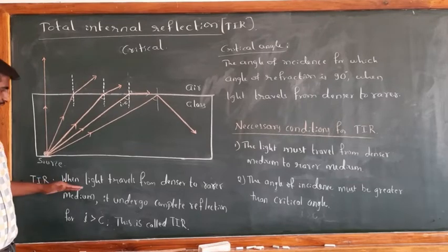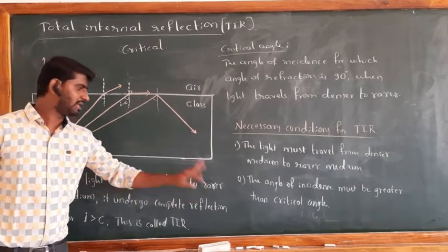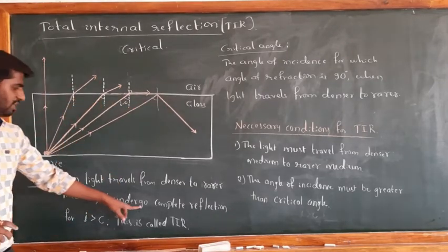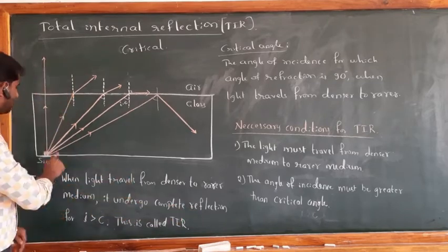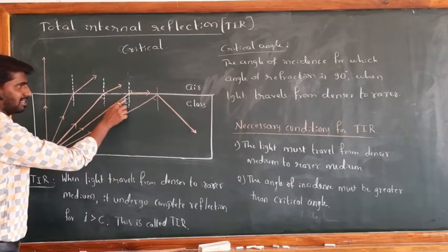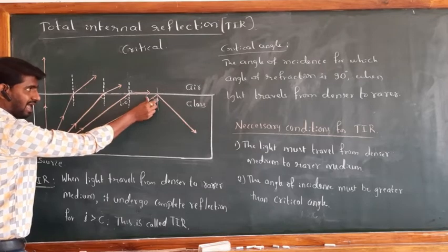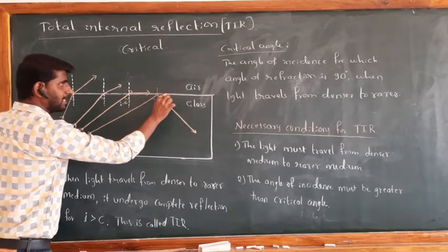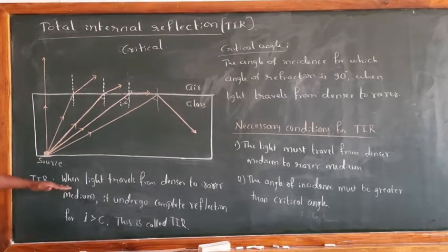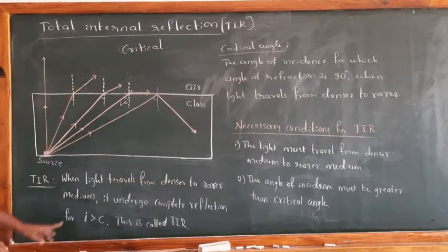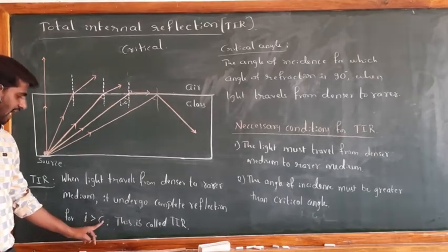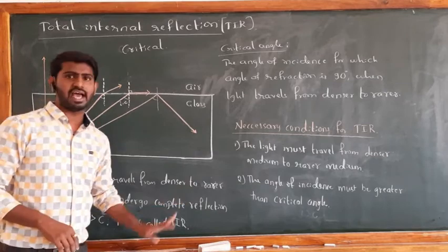When light travels from a denser medium to a rarer medium, such as glass to air, it undergoes complete reflection for I greater than C. Here C is the critical angle. When the angle of incidence is increased beyond the critical angle, instead of refraction or grazing, it is reflected back completely. This is called TIR.